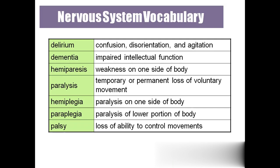'Paralysis' is the temporary or permanent loss of voluntary control of the body — a paralytic person cannot have voluntary control and their body will not listen to them. 'Hemiplegia' means paralysis to one side of the body. In paresis the person can move, but in plegia it is complete paralysis — they can't even move a finger. That is hemiplegia.